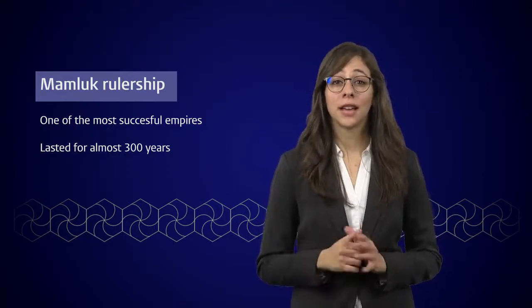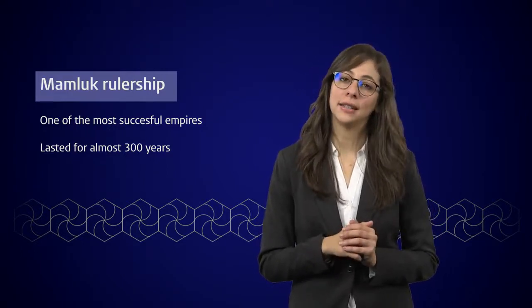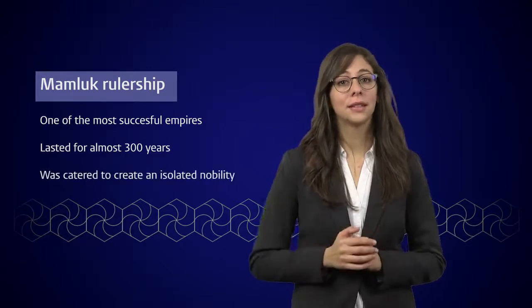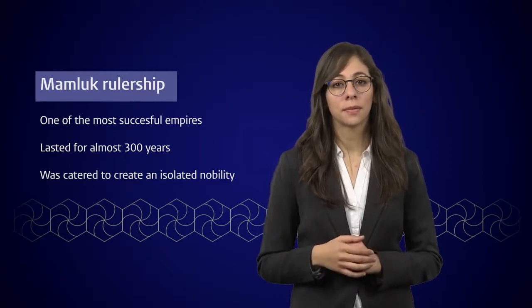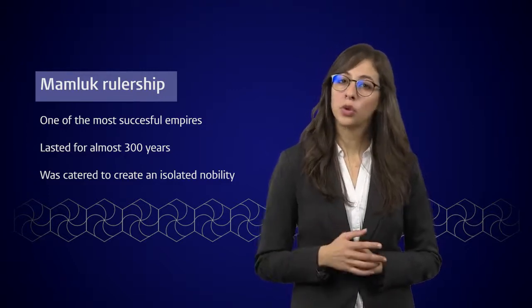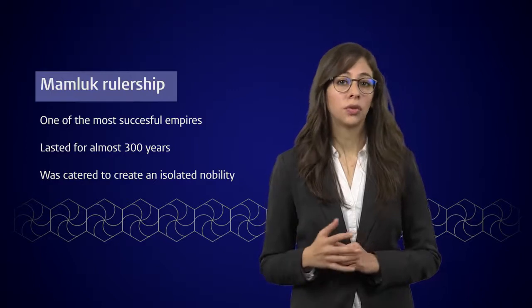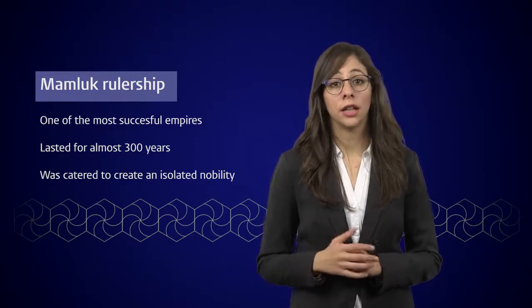Only those bought as slaves could join the ruling elite and the whole system was catered to create an isolated nobility that was replaced after each generation. Children of Mamluks were in principle excluded from rulership, which regularly caused tension.